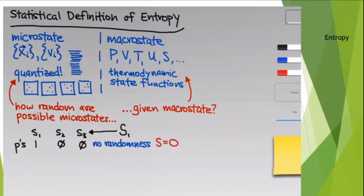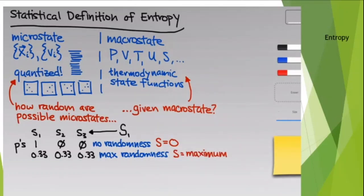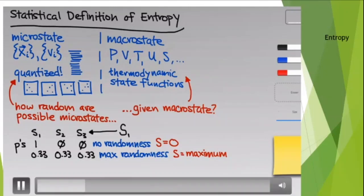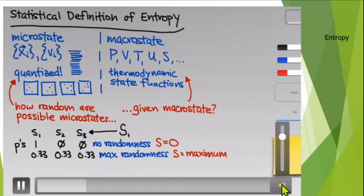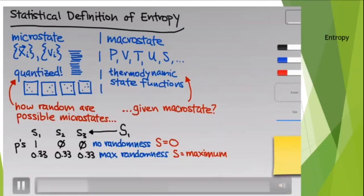Now imagine all three microstates have equal probability of 1/3. We cannot know which microstate the system is actually in — entropy is at a maximum and the randomness of the microstates is maximized. The probability distribution over the microstates figures deeply into the statistical definition of entropy.